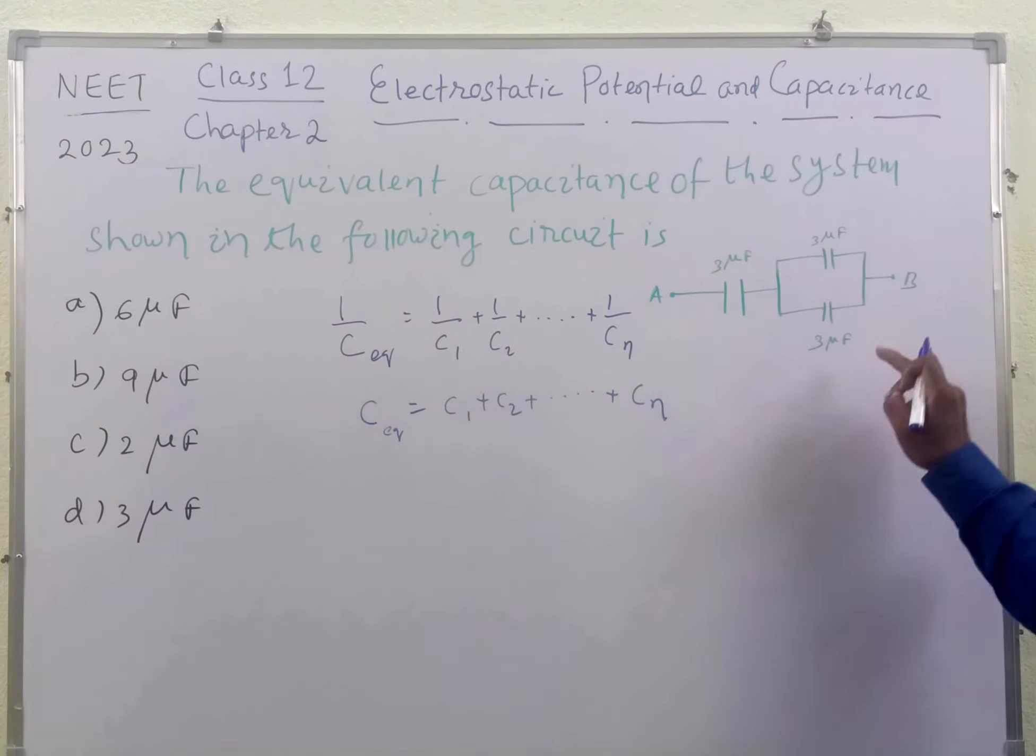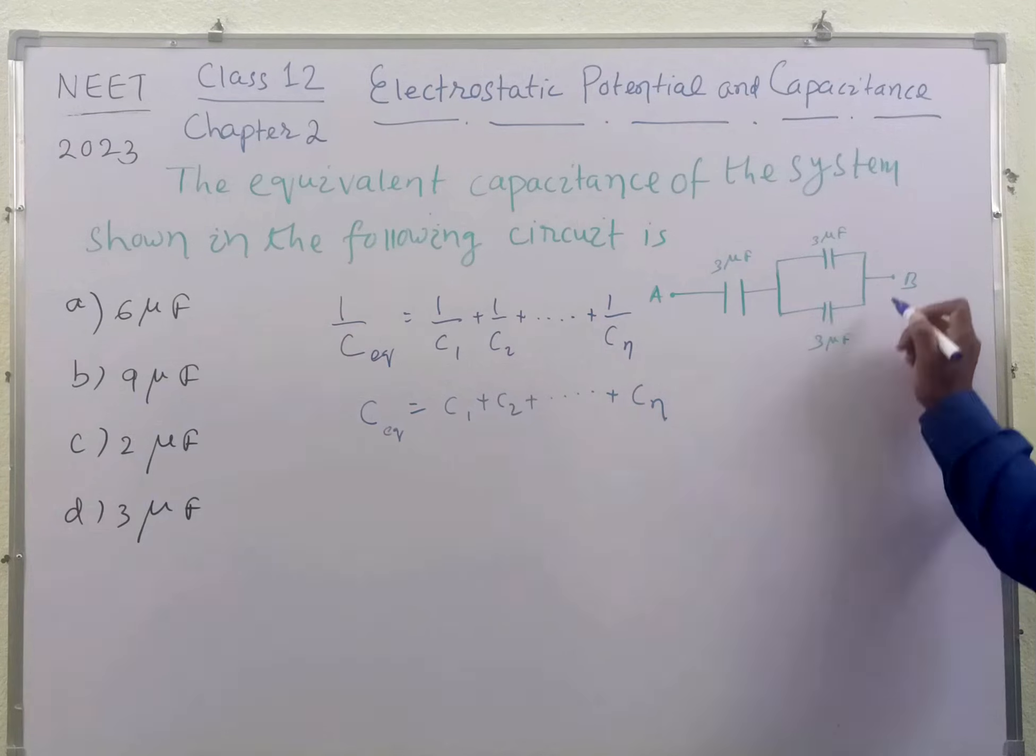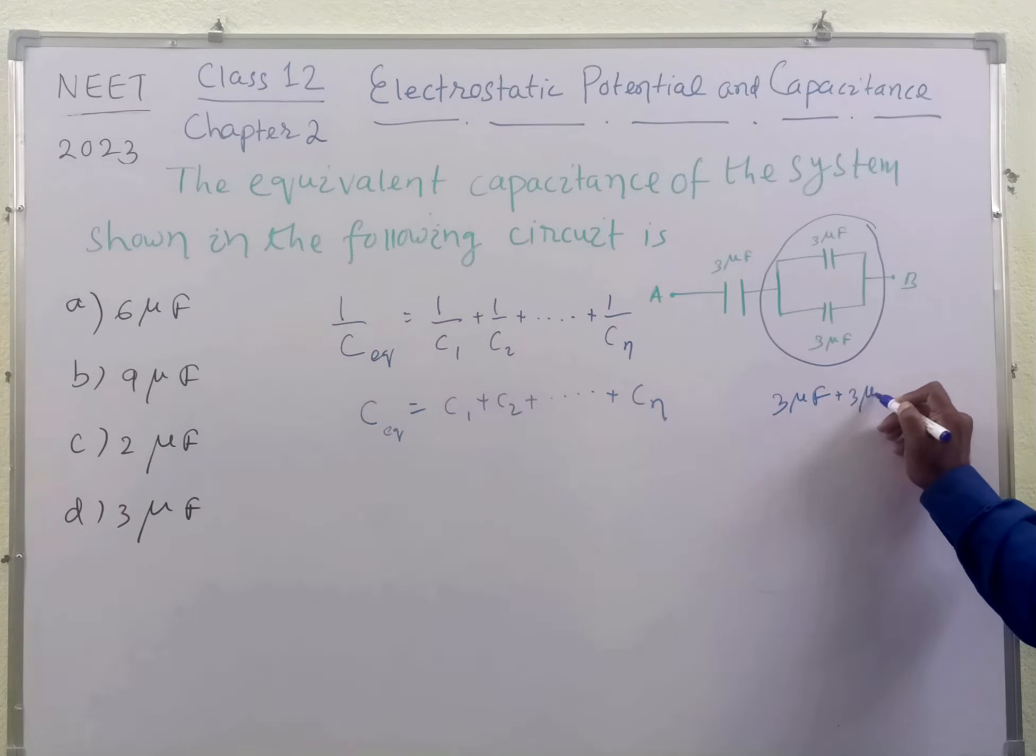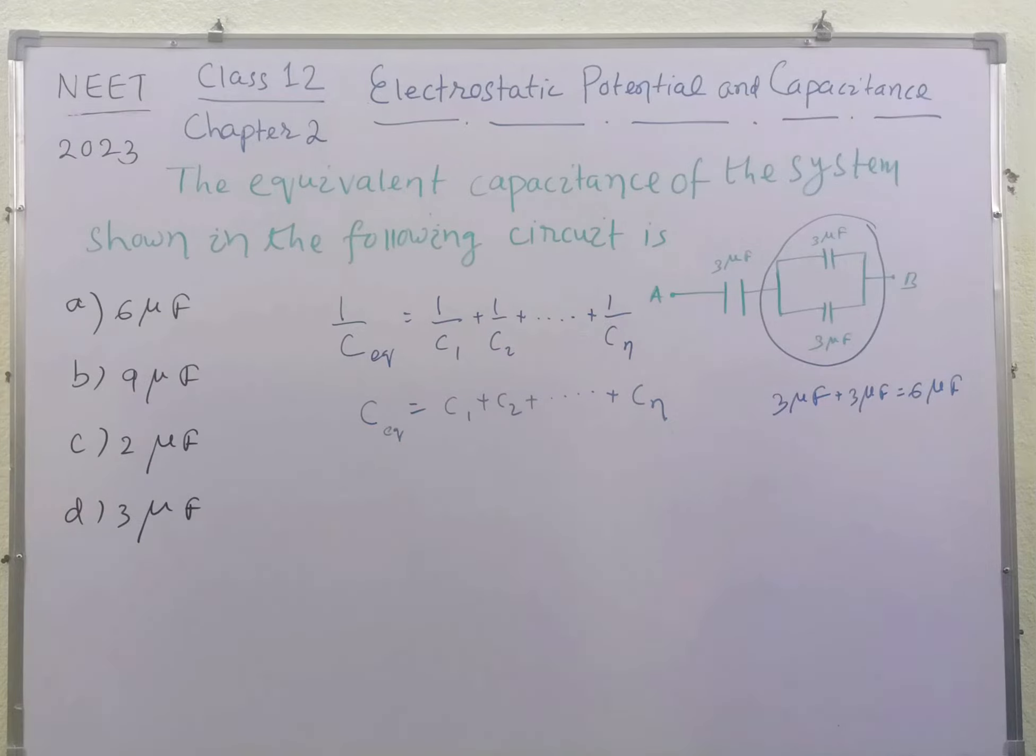Here two capacitance of 3 micro Farad have been connected in parallel. So what will be the equivalent capacitance of this unit? This will be 3 micro Farad plus 3 micro Farad equal to 6 micro Farad.